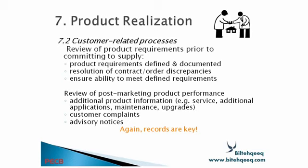Section 7.2 also covers review of product requirements prior to committing to supply. Product requirements must be defined and documented. This includes resolution of contract and order discrepancies, ability to meet defined requirements, review of post-marketing product performance, and additional product information such as service applications, maintenance, updates, customer complaints, and advisory notes. Records are key. Before accepting any order from the customer, you must ensure you have well understood what they are asking and requiring. Any conflict must be resolved before accepting any order.